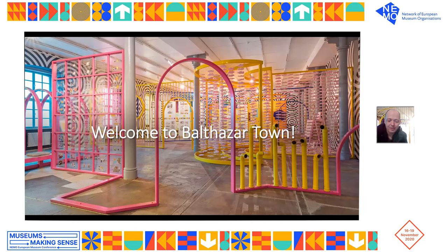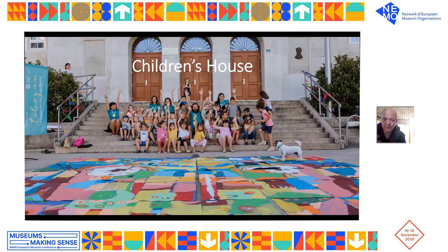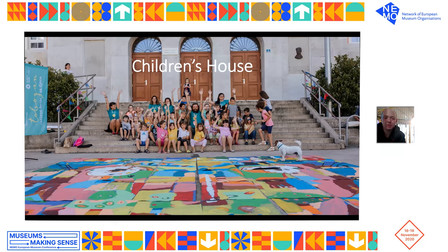This exhibition is, of course, part of the Rijeka 2020 program — European Capital of Culture. While we were announcing our European Capital of Culture, we were always saying it was going to be one very special year, and guess what — it really is a special year. This exhibition is part of the Children's House program line, one of the program lines of Rijeka 2020, European Capital of Culture — a program line dedicated to children.